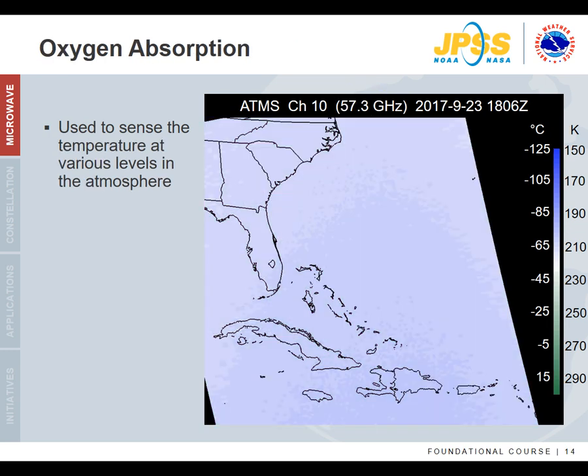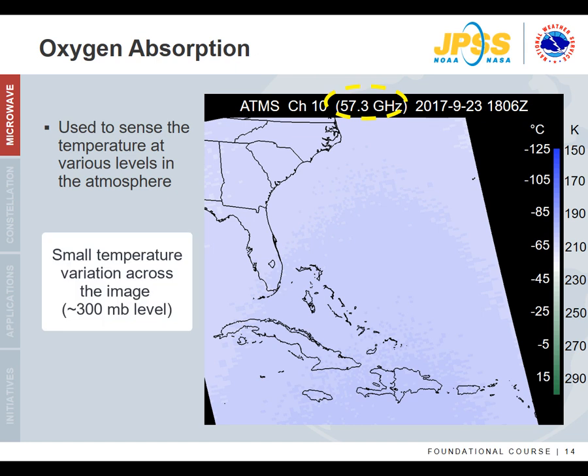Here is another image from ATMS for the 57.3 GHz channel covering the same area. This is in the oxygen absorption region and corresponds to the upper troposphere around 300 millibars. You notice that it would be very difficult to discern that there is a tropical cyclone. In the next module on absorption, there will be a brief overview on obtaining moisture and temperature profiles with the oxygen and water vapor channels.